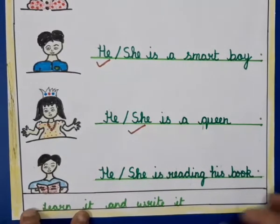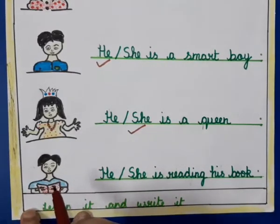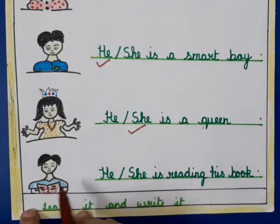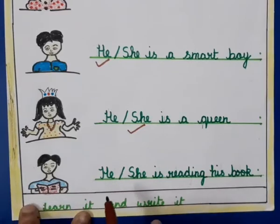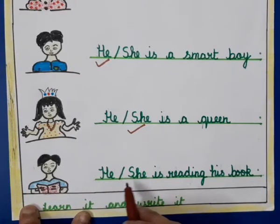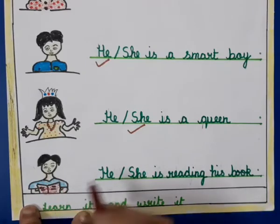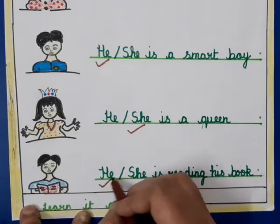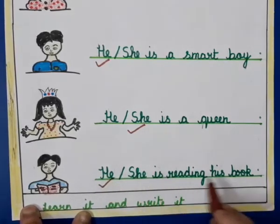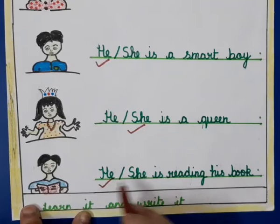The next picture is of a boy. As you can see, he is reading a book. We use 'he' for boys. The sentence is: 'He or she is reading his book.' Here you can see a picture of a boy, so we will tick 'he'. He is reading his book.